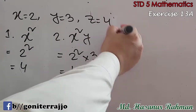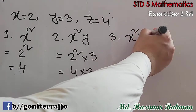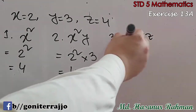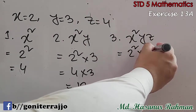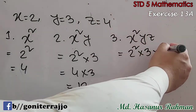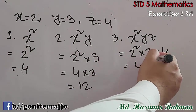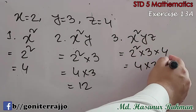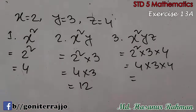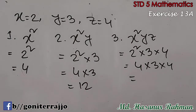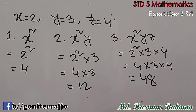Now number 3: x squared y z. Here x represents 2, so 2 squared into y, which represents 3, into z, which means 4. So 2 squared is 4, into 3 into 4. If we multiply 4 times 3 times 4, that will be 48. So 48 will be the answer of number 3.